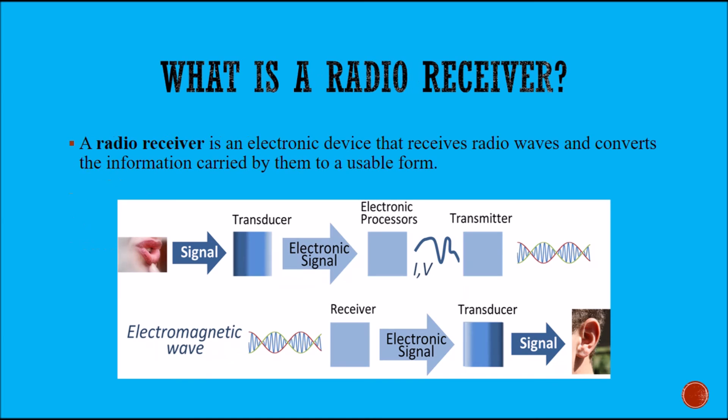So now we start with: what is a radio receiver? A radio receiver is an electronic device that receives radio waves and converts the information carried by them to a usable form.